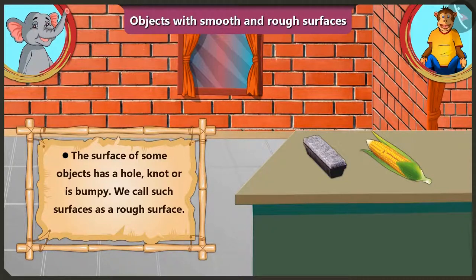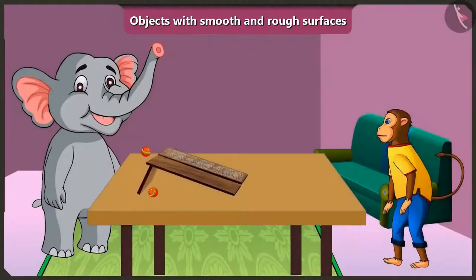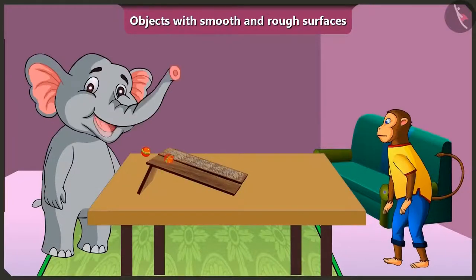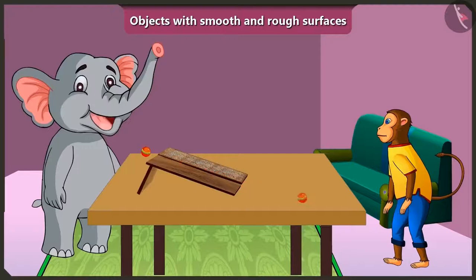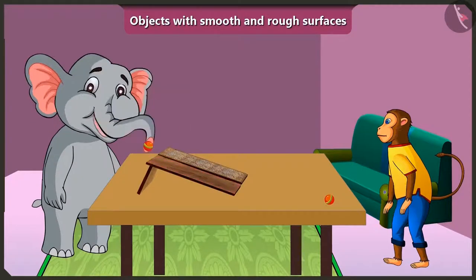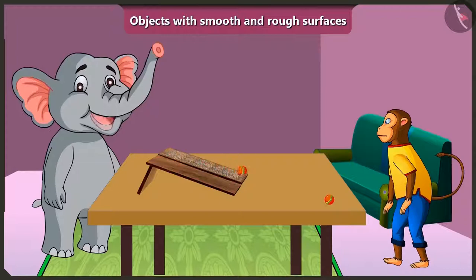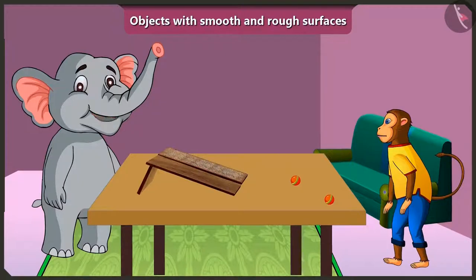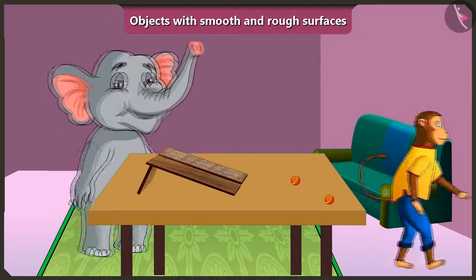Now I understand — the ball rolls faster on this wooden slope because it has a smooth surface, and the ball rolls slowly on the other slope because it has a rough surface. Well done Appu. Hey Jaggu, I am very hungry. Come on, let us go to the kitchen and eat something.